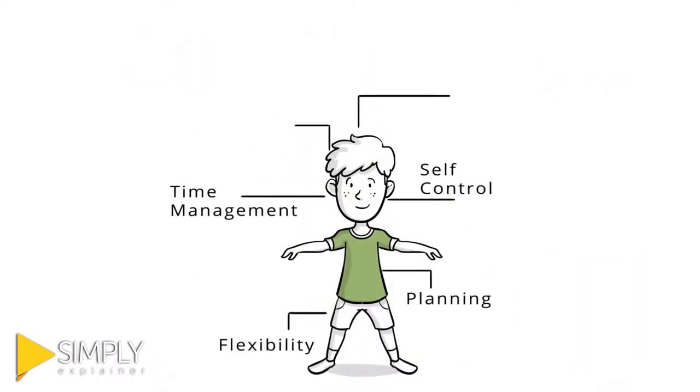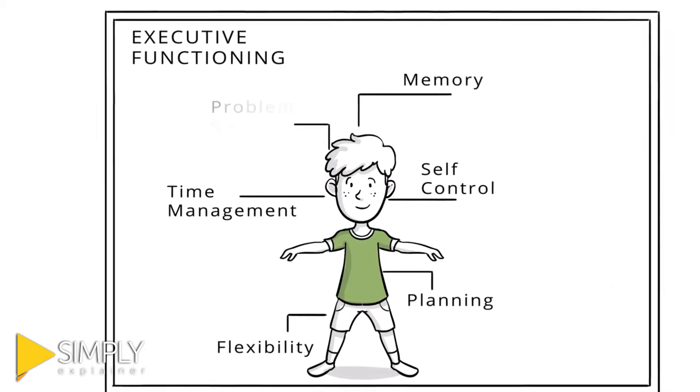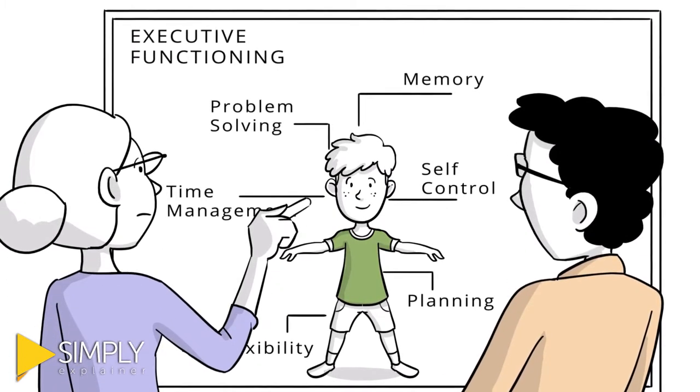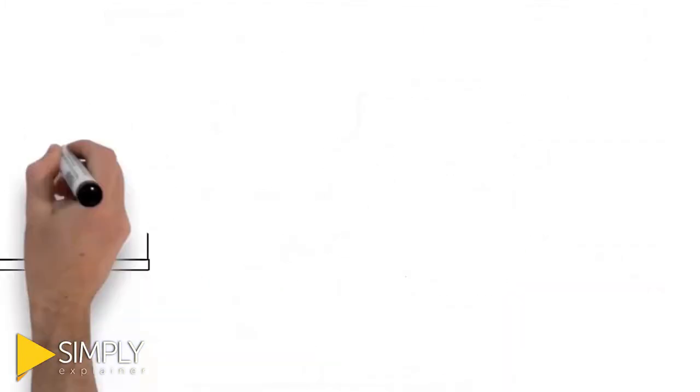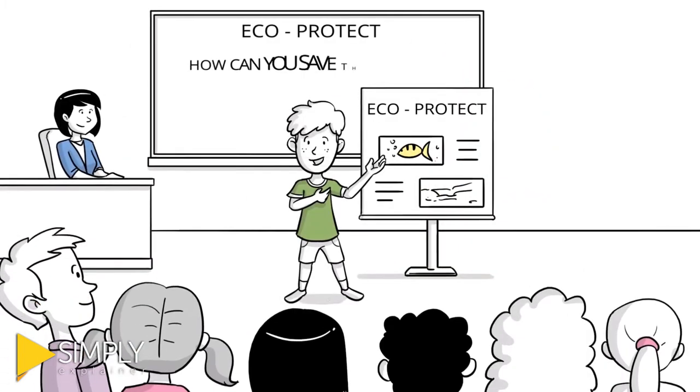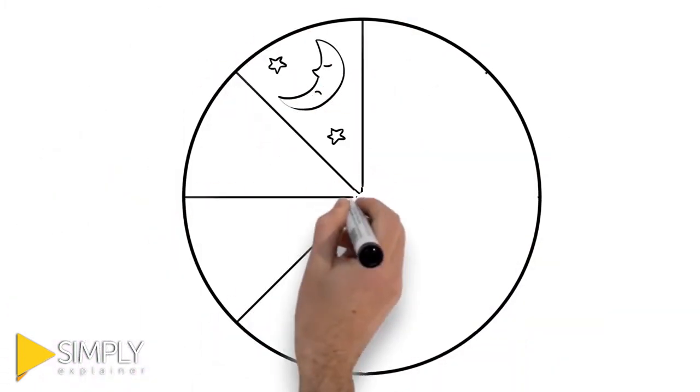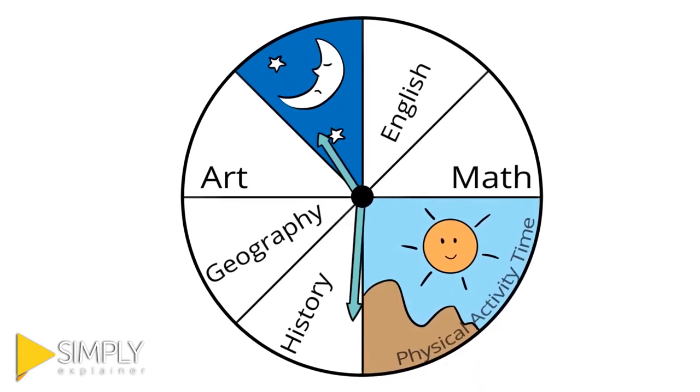Children need tailored learning plans. They need executive functioning skills like memory and problem-solving. They need social emotional learning capabilities. But where is the time to instill these skills in every child in your school?